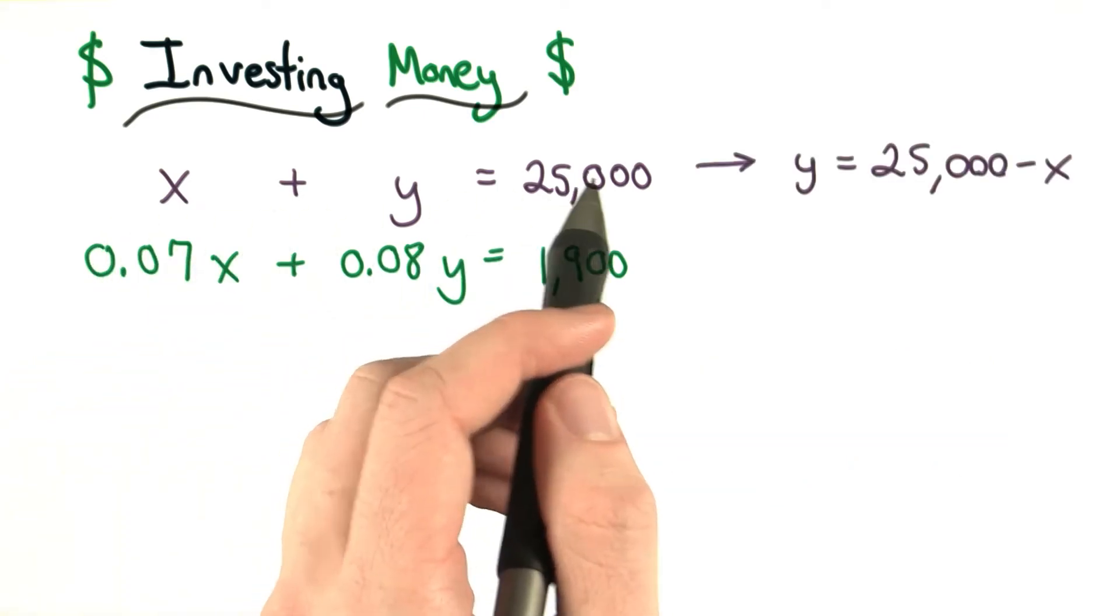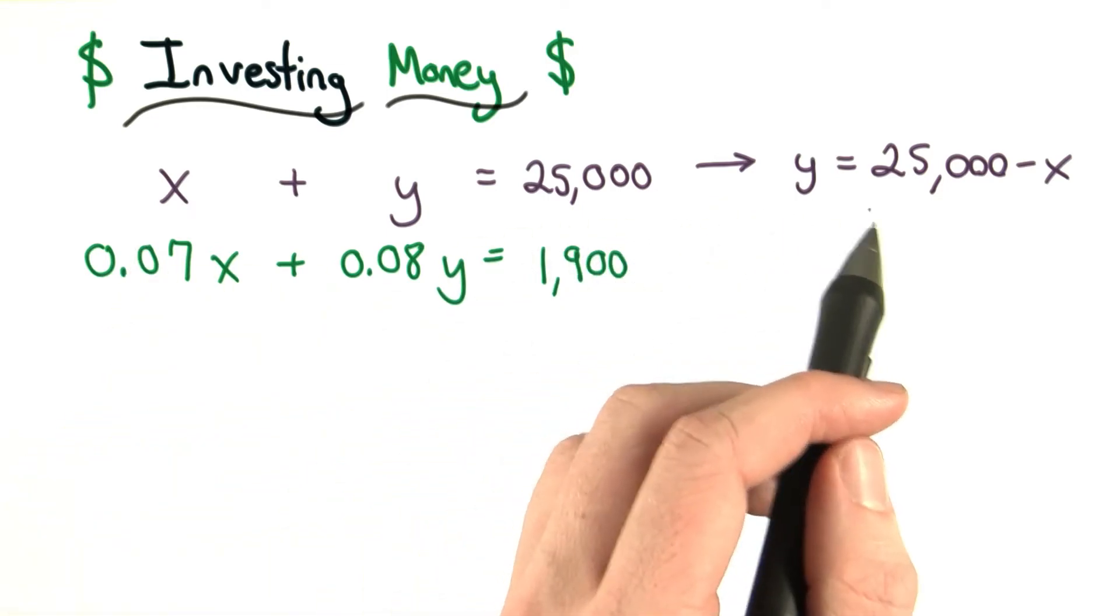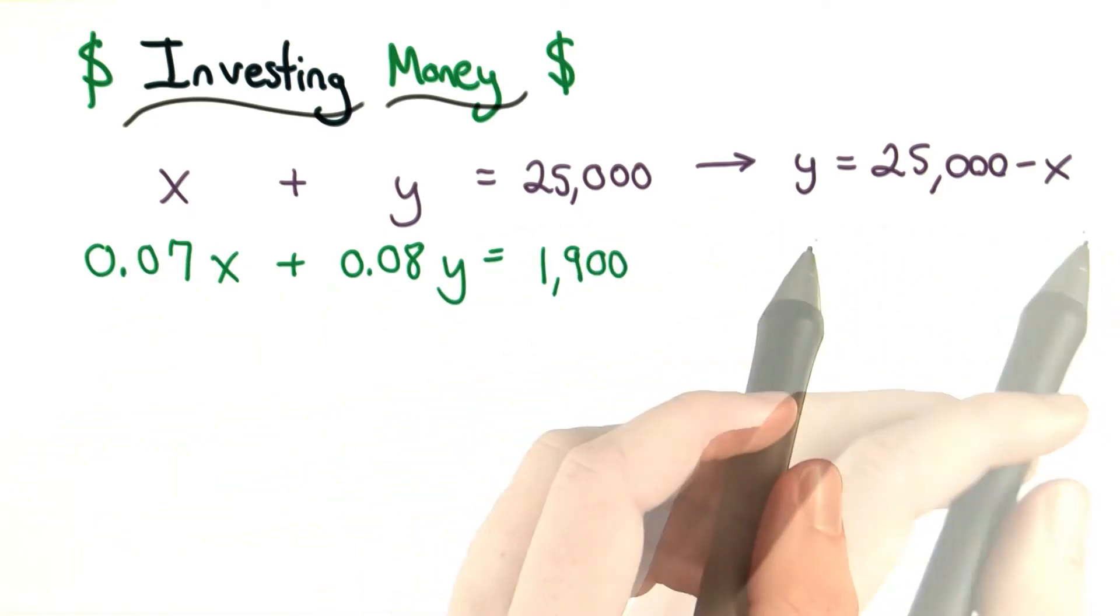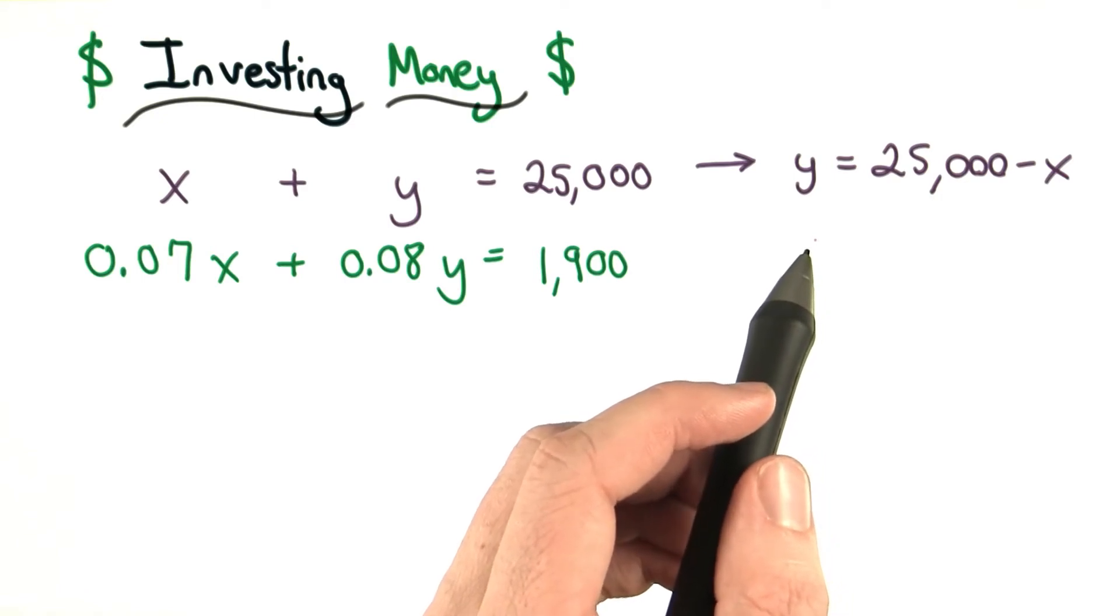I'm going to rewrite this first equation by subtracting x from both sides to get y equals 25,000 minus x. I did this so I could use substitution. I think that's the easier choice here.